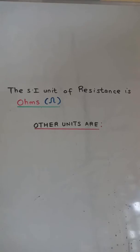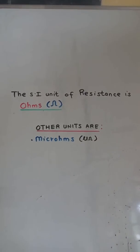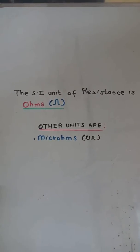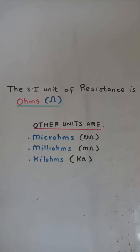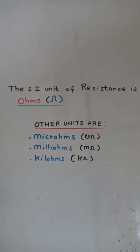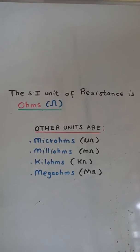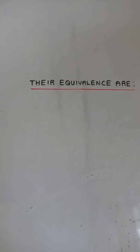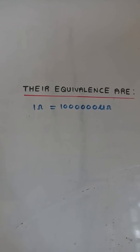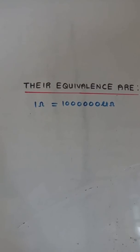Other units are micro-ohms, milli-ohms, kilo-ohms, and mega-ohms. Their equivalents are: 1 ohm is equal to 1 million micro-ohms.